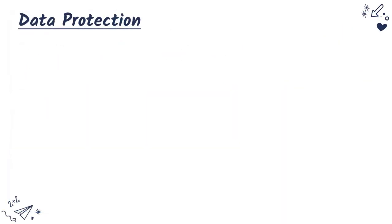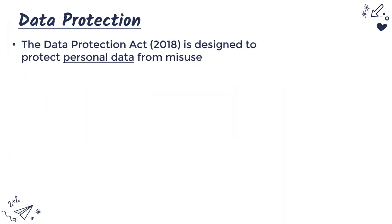The Data Protection Act was last introduced in 2018. We often write the date after a law — it's not really worth remembering the date, it's not as important as the name of the law. We write the year because there are different versions of laws; the previous version was back in 1998, so that old version is a bit different to the new version. This whole law is designed to protect personal data from misuse.